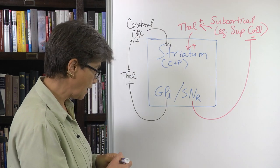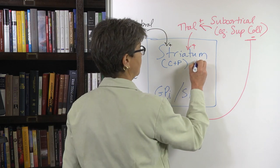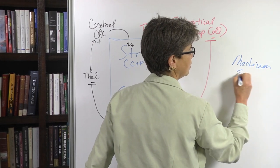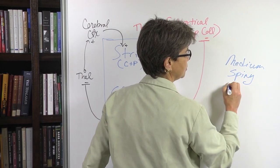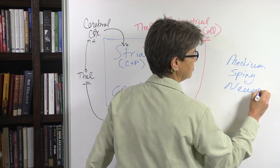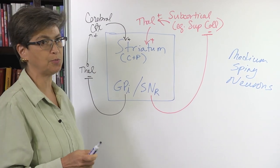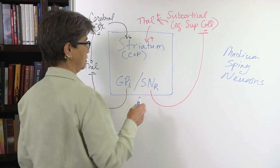The striatum has cells called medium spiny neurons. These are famous neurons, not quite as famous as Purkinje cells, but maybe next to them.